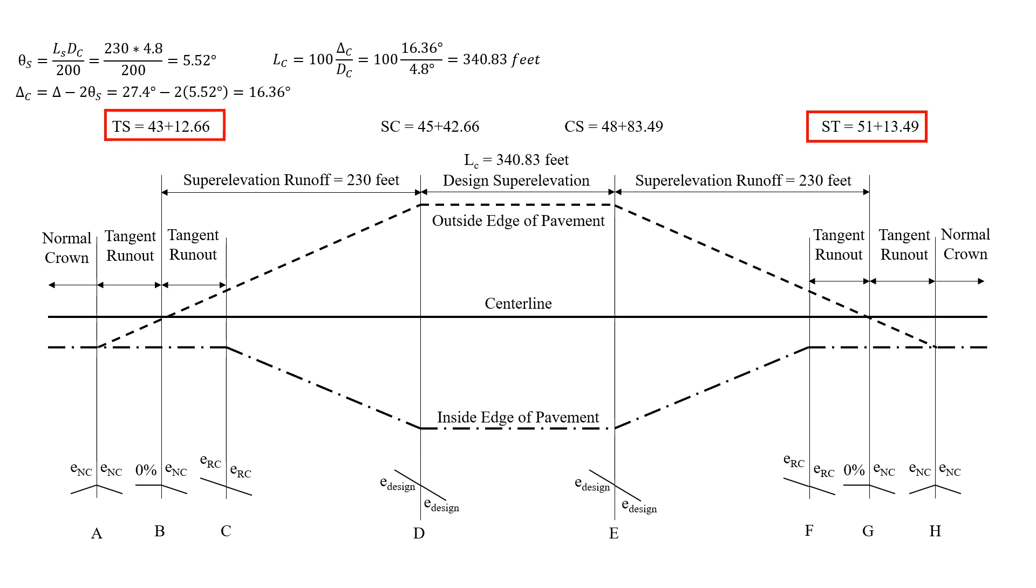So the first part of the problem is asking for adverse crown removed, and that's points B and G on the diagram here that correspond to our TS and ST stations. So our points are 43 plus 12.66, and that was actually a given, and our ST 51 plus 13.49.